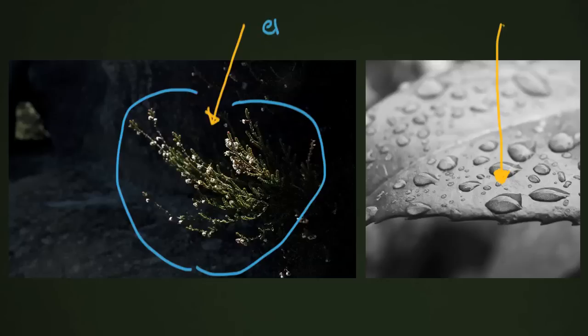So you can use light to emphasize. We've talked about emphasizing in some of our other lessons about camera angle and things like that, but you really want to look at how light emphasizes something. If there's a big contrast between two things, you might be able to use that light to emphasize something.